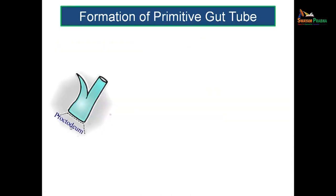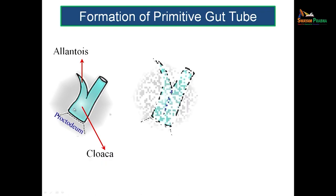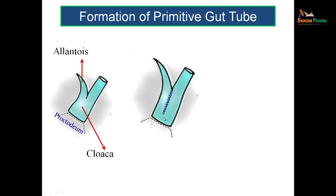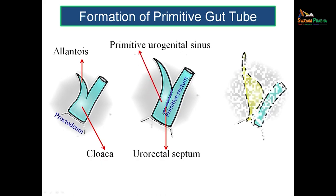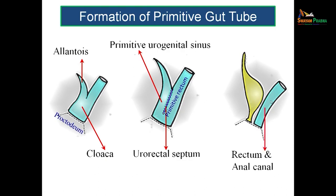You can see the cloaca ending at the proctodeum. The allantois is visible, and you can see a septum coming down — the urorectal septum — dividing the cloaca into a posterior or dorsal primitive rectum and an anterior or ventral primitive urogenital sinus. From the primitive rectum we have the rectum and anal canal formed, and from the primitive urogenital sinus the bladder is formed.